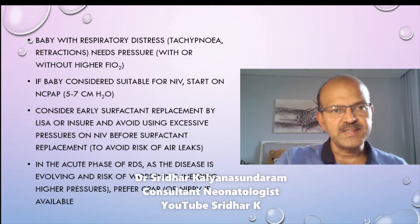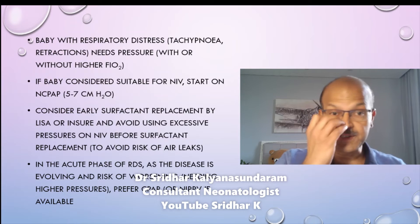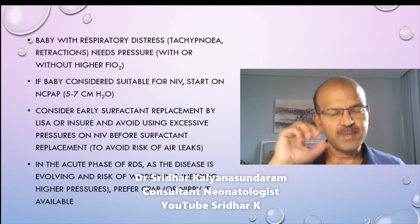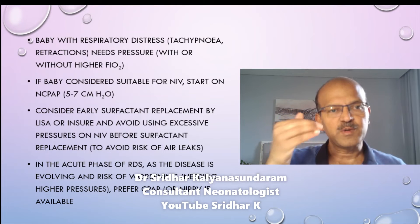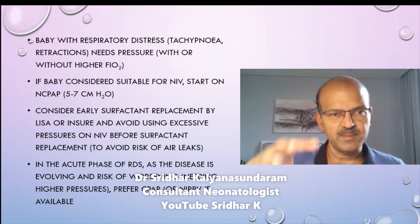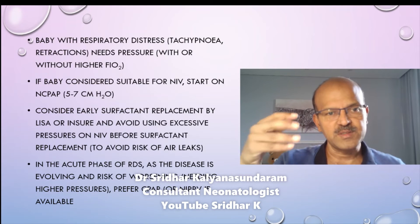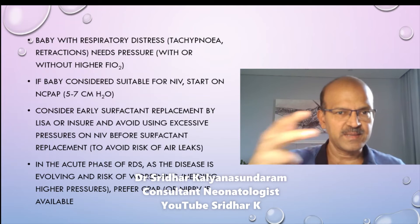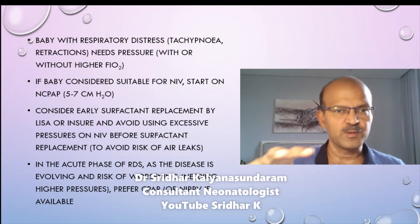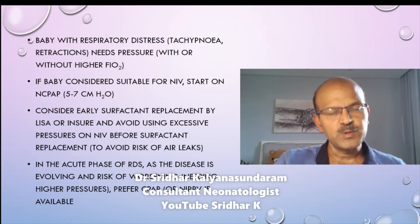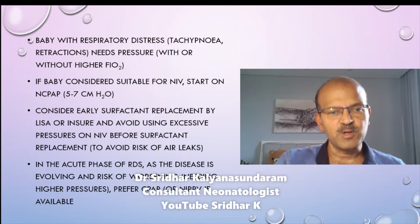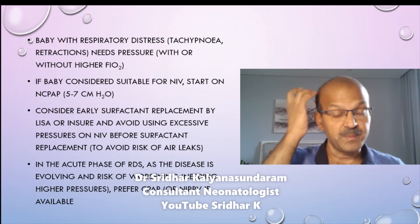The baby with respiratory distress needs pressure, with oxygen titrated by FiO2 based on saturation. If suitable for non-invasive ventilation, we start with nasal CPAP of 5 to 7 cm. In RDS, you would not want to exceed 7 cm without replacing surfactant, because the stiff lung is at risk of air leak from excessive pressure. This is why early surfactant replacement is considered, and also why you avoid NIPPV unless you are confident about replacing surfactant. In the acute evolving phase of RDS, CPAP or NIPPV is preferred over high flow.